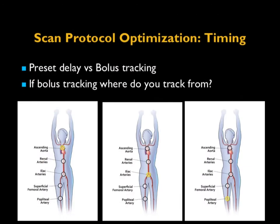In terms of how we trigger the scan, you can do a preset delay or a triggering point. For older patients, triggering is probably better because those patients sometimes have decreased cardiac output. Depending on where you're scanning, you could trigger at the arch, at the bifurcation, or by the knee. If you're only scanning the lower extremities, you would have done the aortic bifurcation. If you're doing chest, abdomen, pelvis, and runoff, then a trigger in the patient's aorta is best.